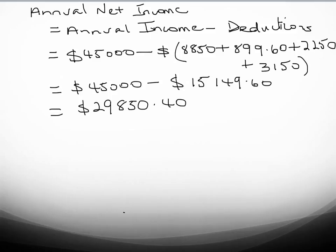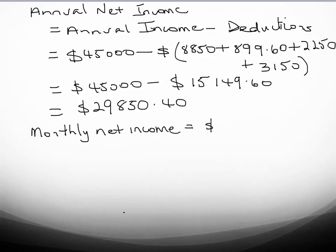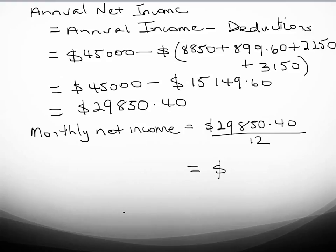Now remember that the question asked us to find the monthly net income. So the monthly net income will equal the annual net income of $29,850.40 divided by 12, since there are 12 months in a year. So this amount will be $2,487.53.